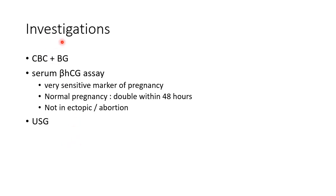What are the investigations done for a case of abortion? Complete blood count and blood grouping should be done. Serum beta-HCG assay should be done — beta-HCG is a very sensitive marker of pregnancy. In normal pregnancy, the level of serum beta-HCG doubles within 48 hours, but this does not happen in ectopic pregnancy or in abortion. Ultrasound is another major investigation in abortion.